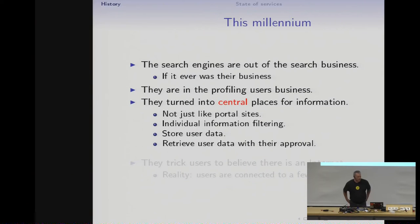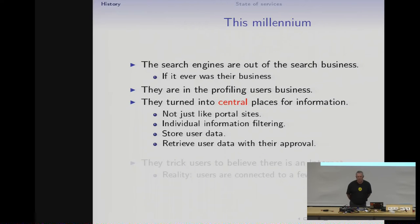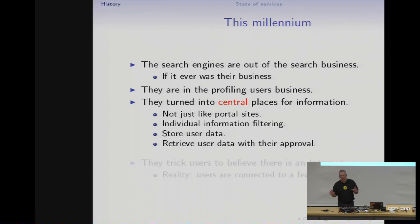After the dot-com bubble, things changed. Search engines — meaning Google — are basically out of the search business now. You can search there, but that's not really their business, and I have some doubt that it has ever been their business. Instead, what they do today is profile users and sell that information. And not only search engines, but there are new players in the game, namely Facebook. What we have now are a few central places for information — not just former portal sites linking interesting pages, but all information at one place: Google, Facebook.